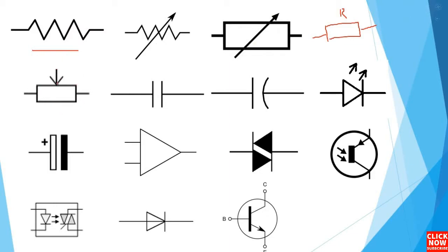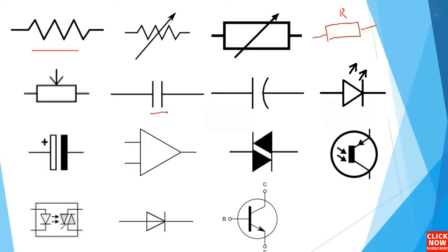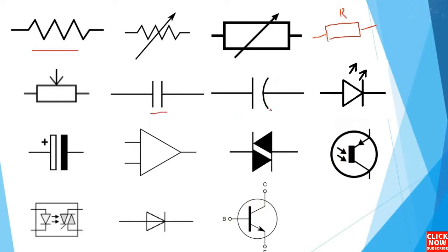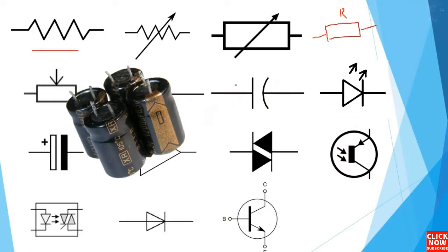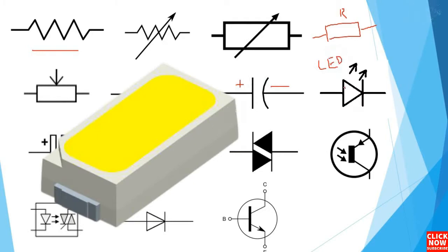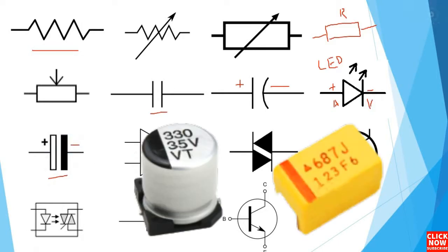Here we have another sample — basically this is a potentiometer. Here this is a ceramic capacitor or a pF capacitor. This is an electrolytic capacitor symbol, or a polarized capacitor, with plus and minus. This is basically an LED or light emitting diode, with two arrows. Here we have a polarized capacitor — this could be an electrolytic capacitor or a tantalum capacitor.